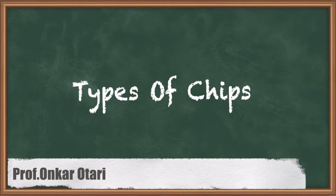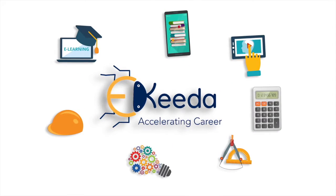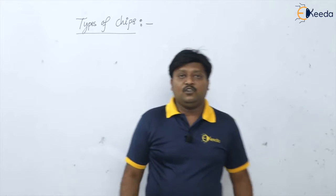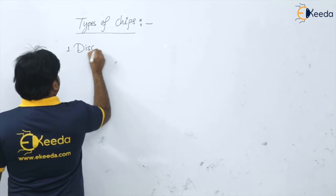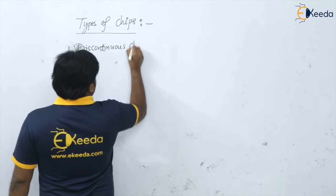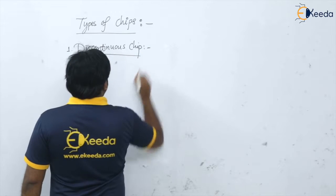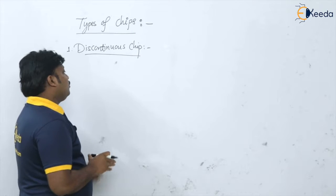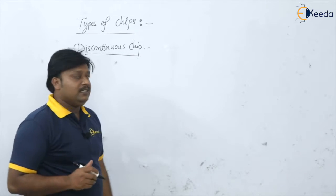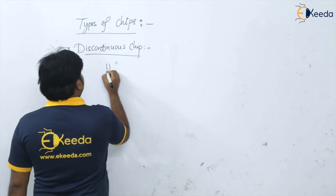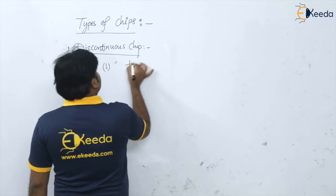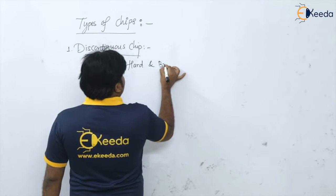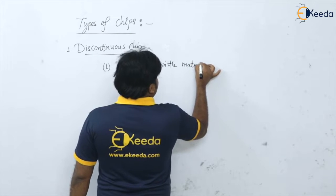Welcome students. In this video we are going to see the types of chips. Let us start with our first chip, that is the discontinuous chip. We are going to see what are the factors that are going to affect this discontinuous chip. Number one, if you talk about the material, which kind of material is responsible for getting this discontinuous chip? Of course, hard and brittle material. With hard and brittle material, we are going to get a discontinuous chip.